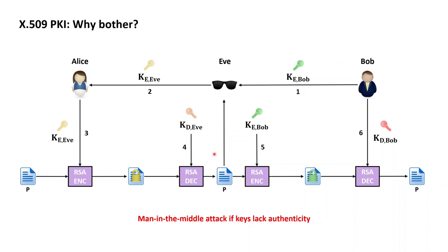This results in the original plaintext now readily available to Eve. In order to have her interception go unnoticed, Eve re-encrypts the plaintext with the public key of Bob that she intercepted beforehand, which again results in a ciphertext that Eve then sends to Bob. Bob then receives a ciphertext encrypted with his public key, so Bob can recover the original plaintext using his private key. If the keys lack authenticity, then the interception of Eve may go unnoticed, but the plaintext originally intended only for Bob has also reached Eve — and thus, if keys lack authenticity, confidentiality may not be constructible within this digital information system.